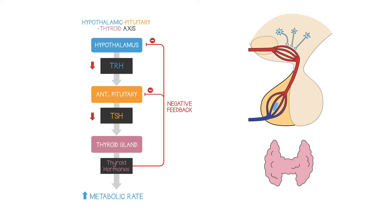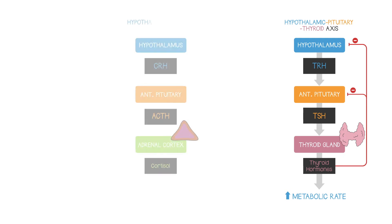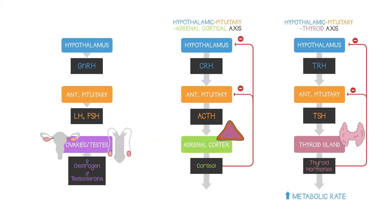There are other endocrine axes controlled by the hypothalamus via the pituitary in a similar way. For example, the hypothalamic pituitary adrenal cortical axis controlling the adrenal cortex and its production of cortisol, and the hypothalamic pituitary gonadal axis controlling the production of testosterone in men or oestrogen in women.